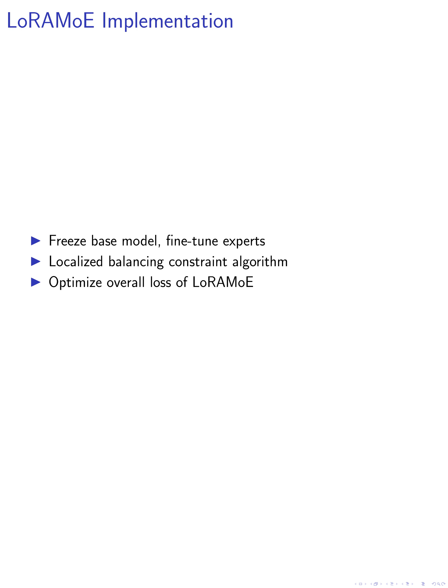Finally, we optimize the overall loss of LORAMOE, which includes the next token prediction loss and the localized balancing constraint loss. The localized balancing constraint loss helps achieve a balance in the importance of experts within the same group, while allowing different groups to focus on different capabilities.